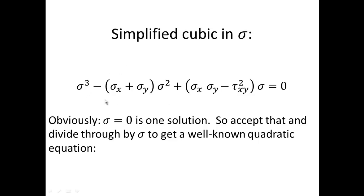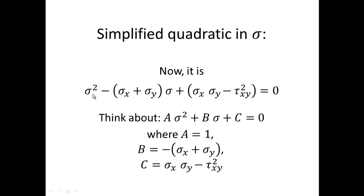Obviously, sigma equals zero is one answer to this cubic, since the constant term has vanished. So let's accept sigma equals zero as one solution, and divide this simplified cubic by sigma to get the well-known quadratic result.